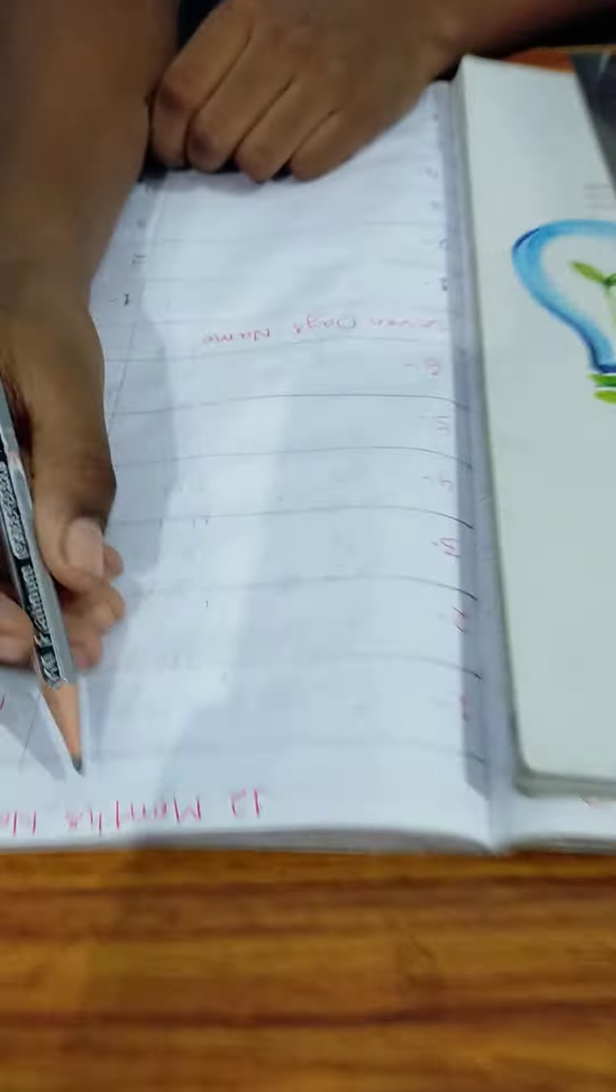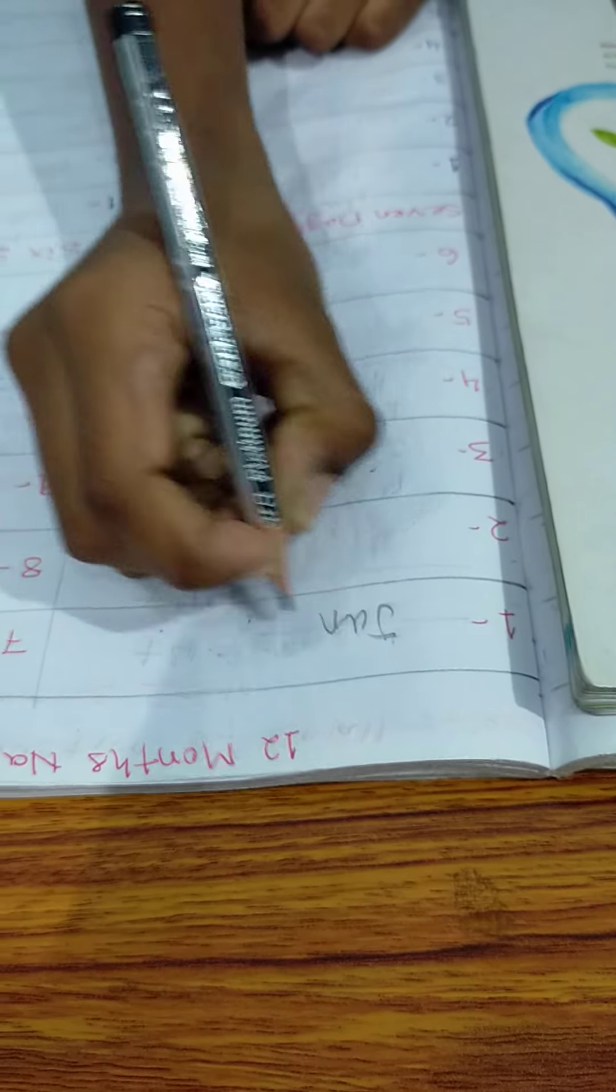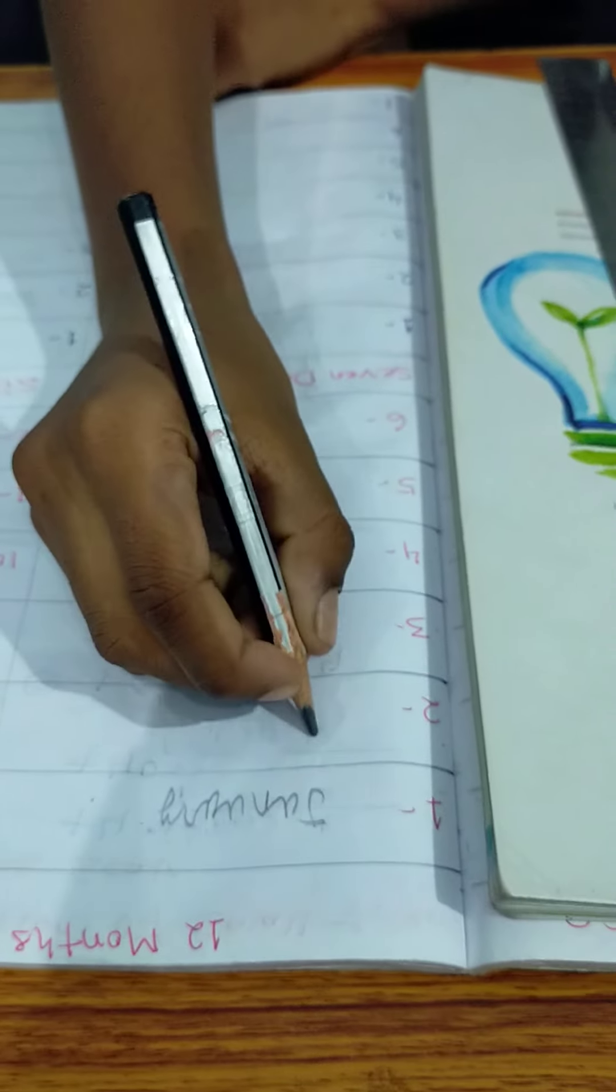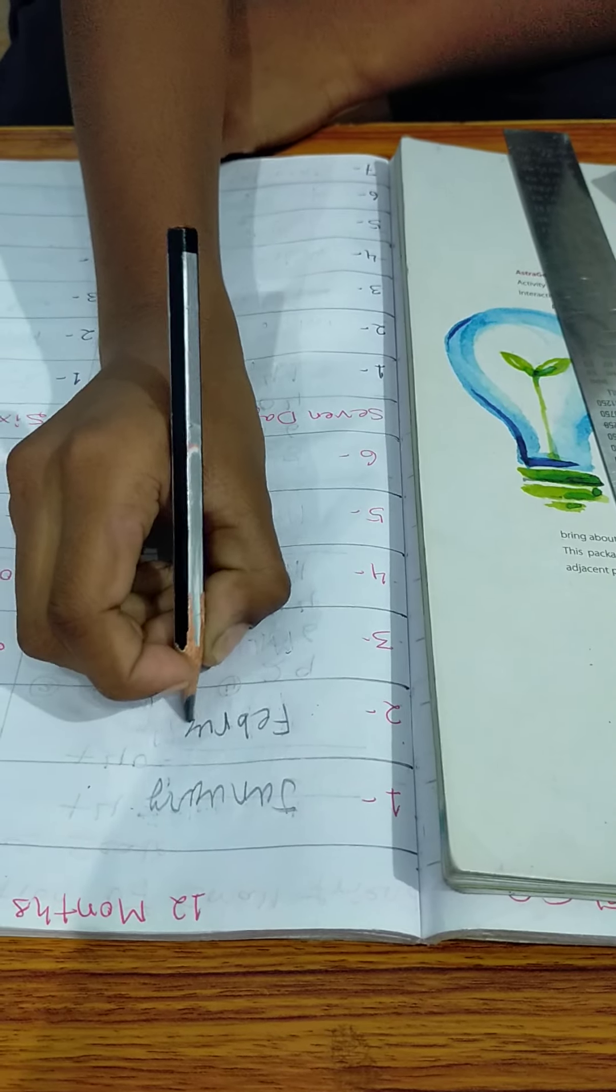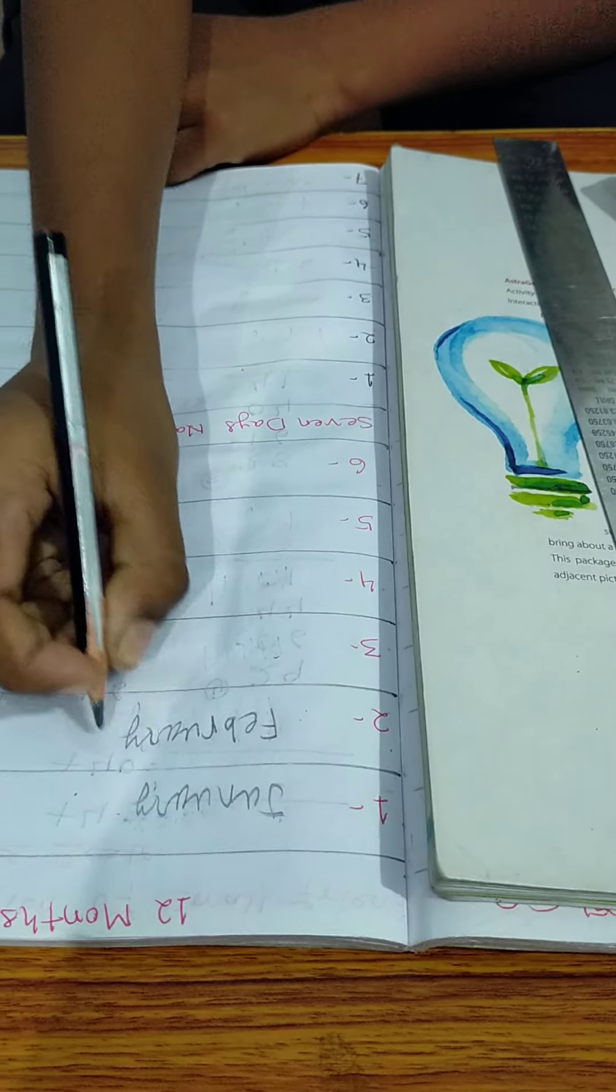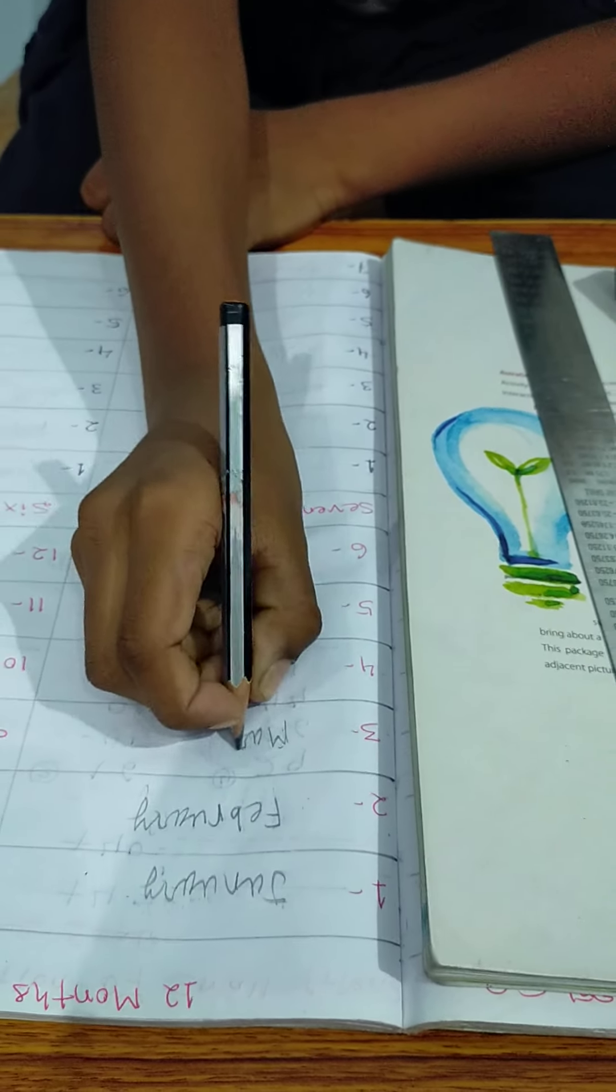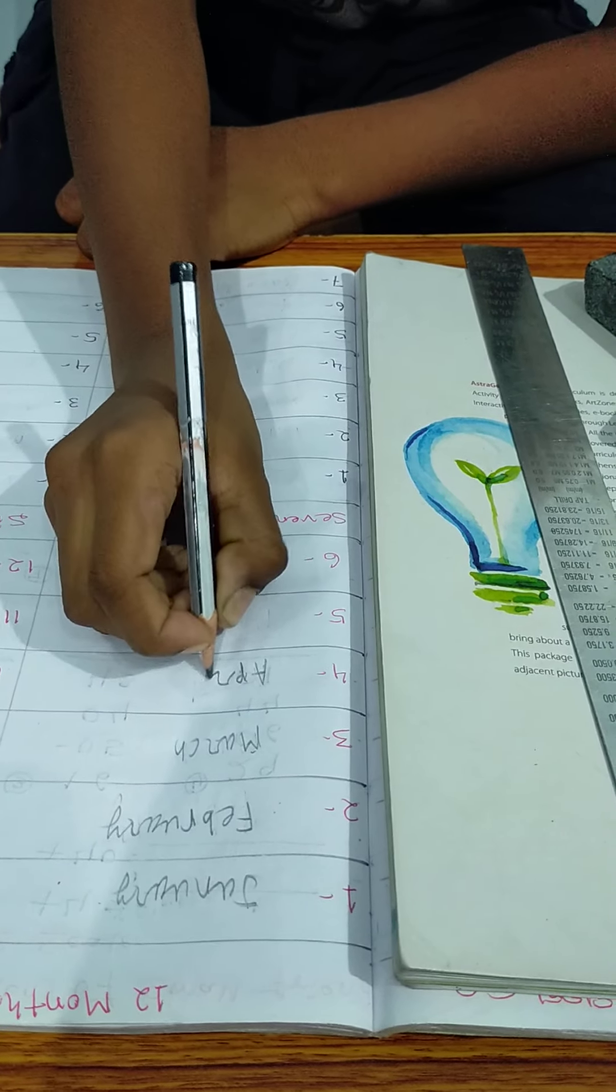Let's start. 12 months name. January, February, March, April.